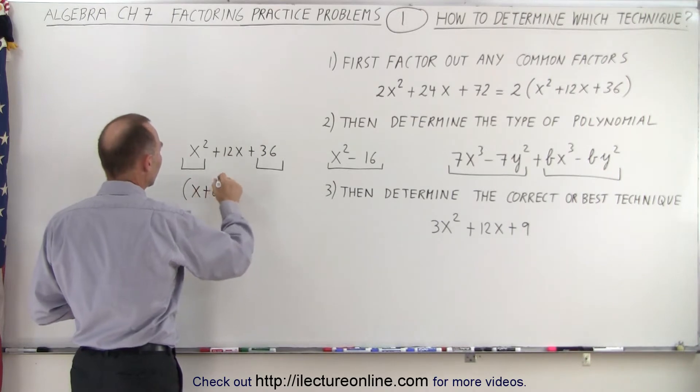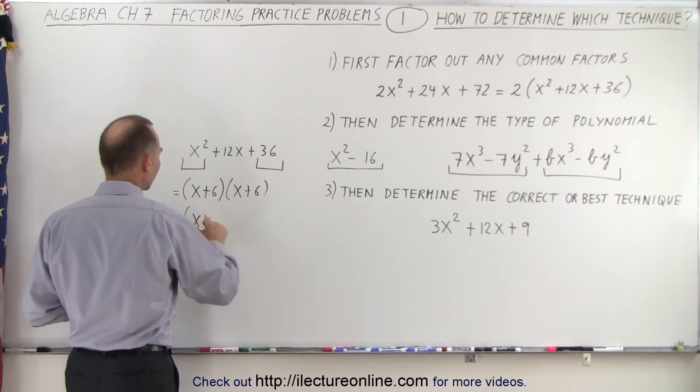So in this case when you factor this you end up with the quantity x plus 6 times x plus 6, or the quantity x plus 6 squared. Quickly checking, x times 6 is 6x, 6 times x is 6x, add it together you get 12x, you get the middle term. Yes we did it correctly. So that's the goal: once you factor out a common factor, determine what you may be dealing with and then what technique you're going to need to factor that.